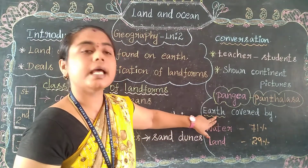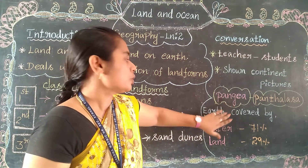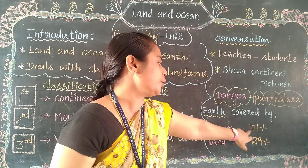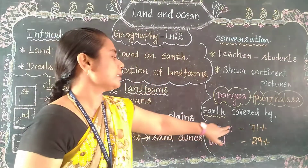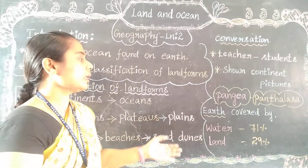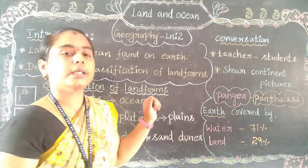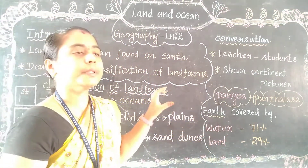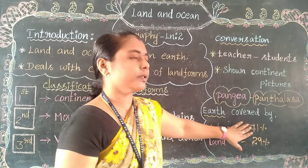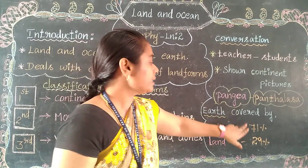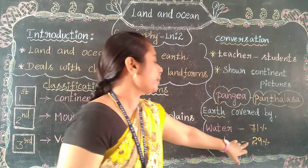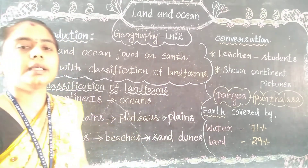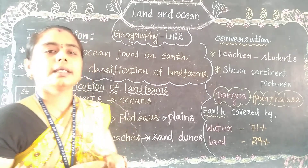The teacher explained that the Earth is covered by water. How many percent? 71 percent. Earth is covered by 71 percent of water and the remaining 29 percent is land. This is the full 100 percent calculation of the Earth. The teacher explained this to the students, then moved on to the classification of landforms.